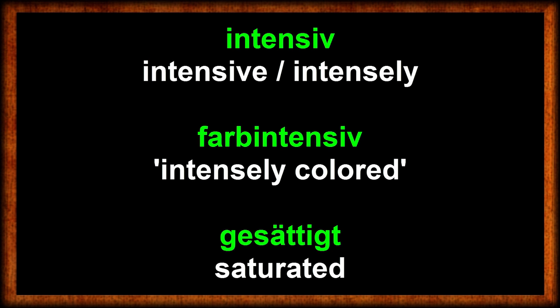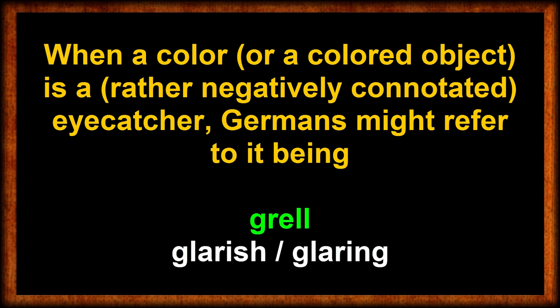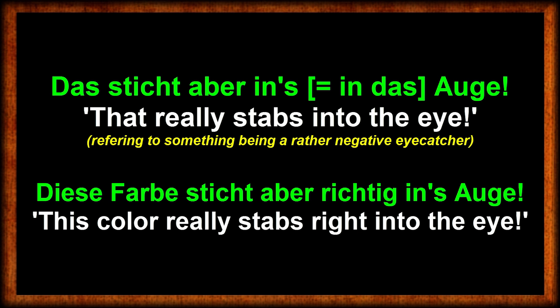A color might also look intensive or intensely — you might say that color is gesättigt, farbintensiv, or just intensiv in general. There are times when a certain color almost makes you blind by simply looking at it, because der Farbton — shade of color — is quite extreme. Many Germans would describe such a color as grell — glaring. In this context you might also come across the phrase Das sticht aber ins Auge — this really catches the eye — or Diese Farbe sticht aber richtig ins Auge — this color really catches the eye right away.